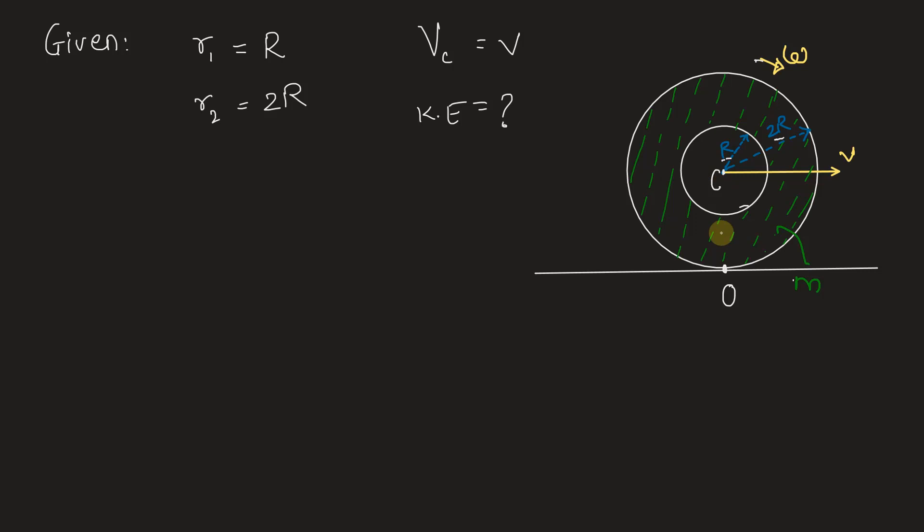Center is C and point of contact is O. Now, we have to find the kinetic energy of a rolling disc.